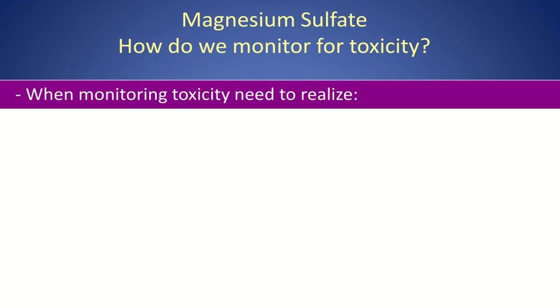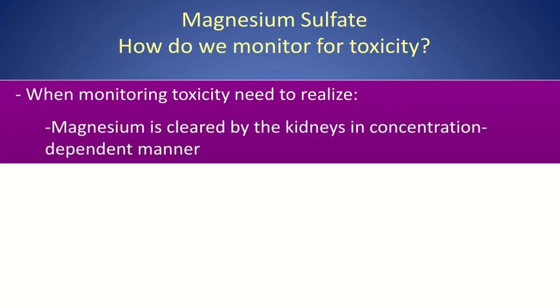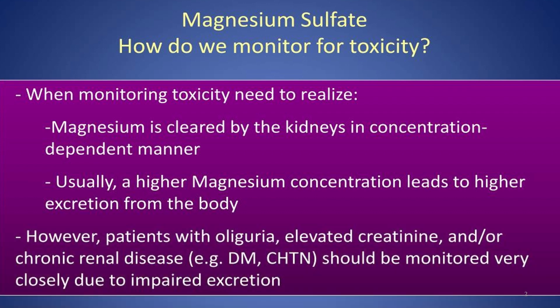When monitoring toxicity, we need to realize a few important things. First, magnesium is cleared by the kidneys in a concentration-dependent manner, meaning it is cleared from the body at a rate proportional to its concentration. A higher magnesium concentration leads to higher excretion. Patients with oliguria, elevated creatinine, and/or chronic renal disease — for example, diabetes mellitus and chronic hypertension — should be monitored very closely due to impaired excretion.